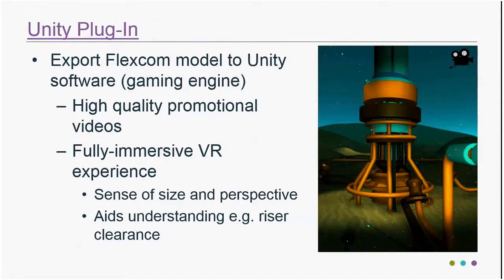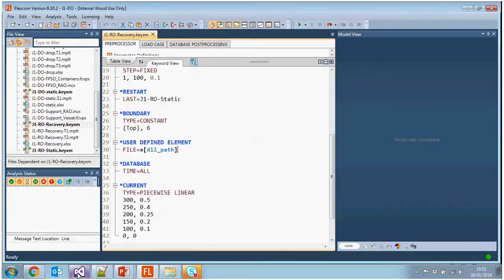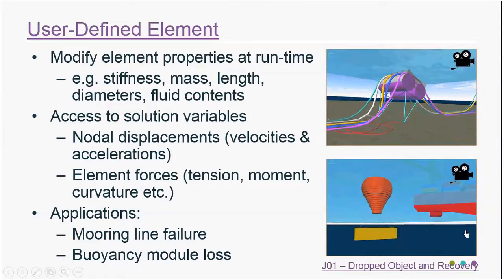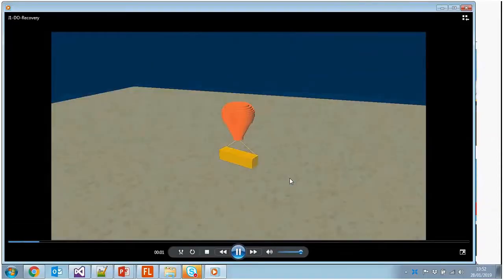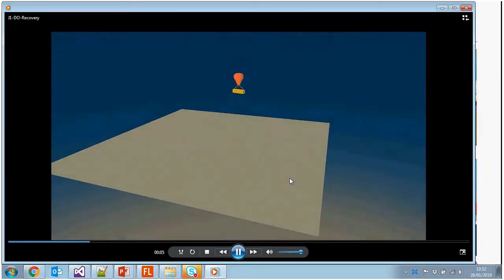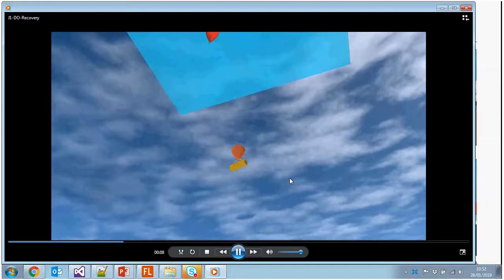So those two features — plasticity and the user-defined element — are highly technical features. The next one I'm going to speak about is the Unity plugin, which is very much a visual or usability feature. The type of animation from FlexCom you've already seen looks okay visually but it's not incredibly visually detailed or high resolution.